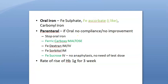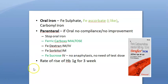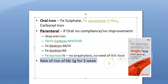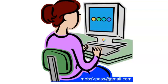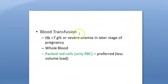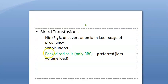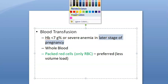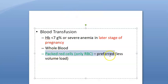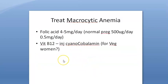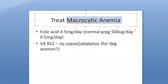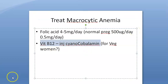Hemoglobin rises approximately 1 gram per three weeks. Give blood transfusion if hemoglobin is critically low and she is near delivery. Give only packed RBCs to avoid volume overload, though iron overload is possible — use a chelating agent if needed. If it is macrocytic anemia, give vitamin B12, not iron.